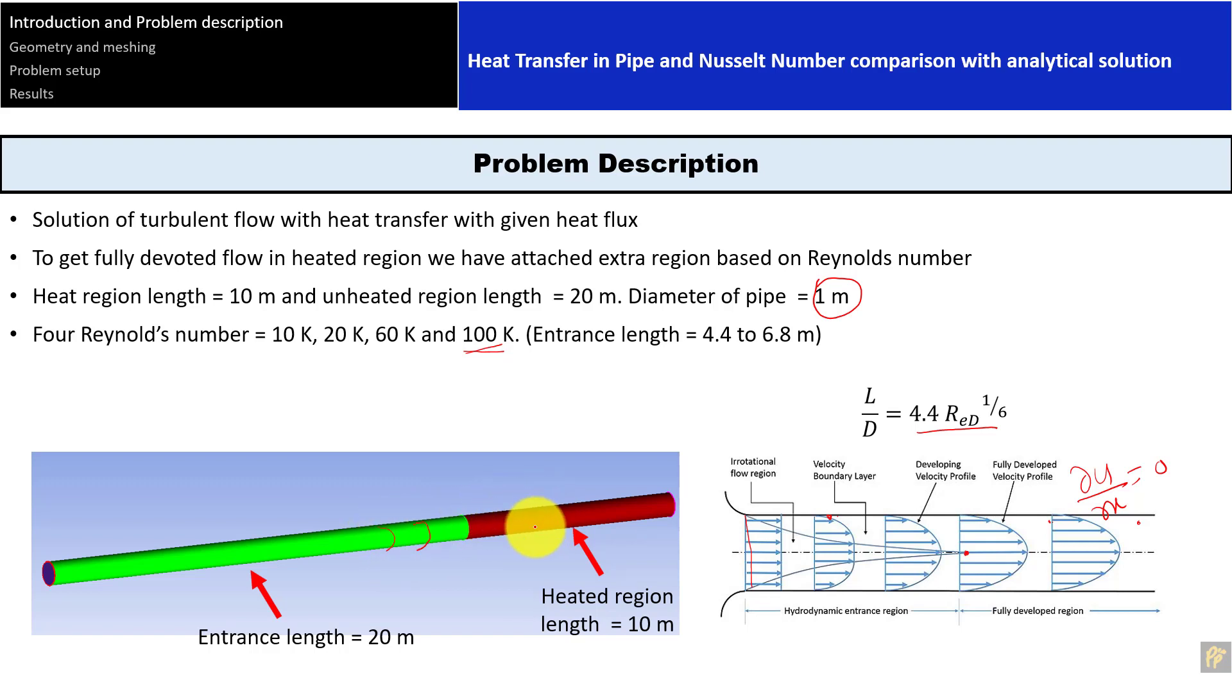After that, I provided constant heat flux of 50 watts per meter squared. What does this mean? If the pipe length is 10 meters and diameter is 1 meter, the circumference would be pi D, which is 3.14, and length is 10. So this is 31.4 meter squared surface area of the pipe. If you apply this, it means we're applying 50 times 31.4 watts. But if you make it per unit area, this equals 50 watts per meter squared. So for 1 meter squared area, we're applying 50 watts.